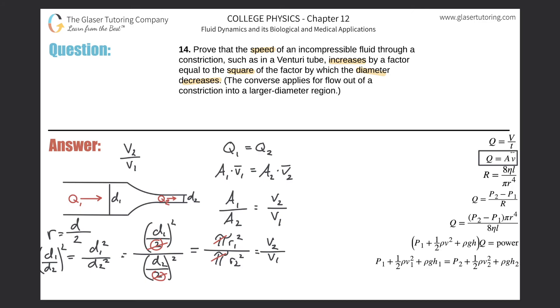Now, let's see what the question was asking. It says, prove that the speed increases by a factor equal to the square of the factor by which the diameter will decrease. So notice,